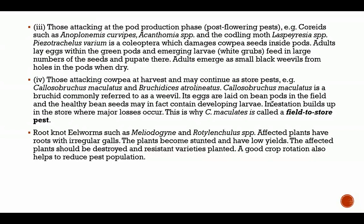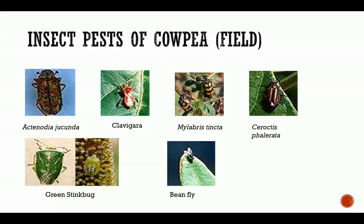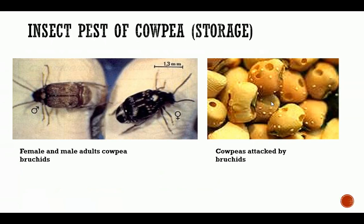Root-knot nematodes such as Meloidogyne and Rotylenchulus species also affect cowpeas. Affected plants have roots with irregular galls, become stunted, and have low yields. Affected plants should be destroyed and resistant varieties planted. A good crop rotation also helps to reduce pest populations.